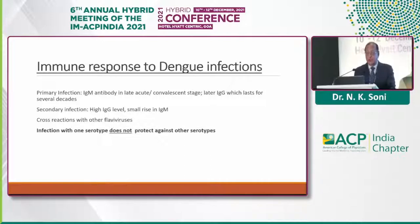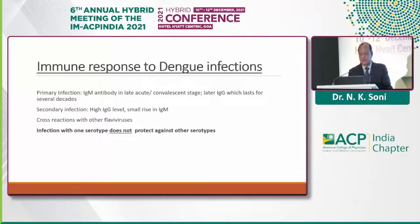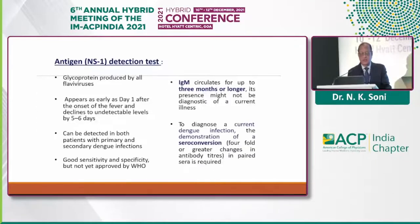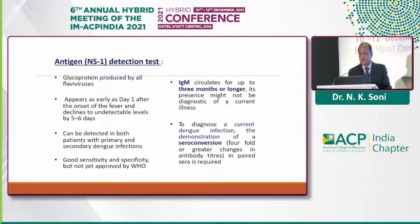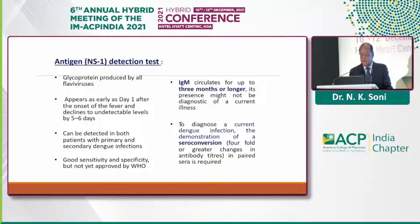Regarding the immune response and investigations: the primary infection shows IgM antibody in the titer in the late acute or convalescent stage. Infection with one serotype does not protect against other serotypes. The NS1 antigen is a glycoprotein that appears early — as early as day 1 at onset of fever — and declines by 5 to 6 days. IgM may circulate and be present for 3 to 4 months or longer. A four-fold or greater change in antibody titer in paired sera is the gold standard for diagnosis of dengue fever.